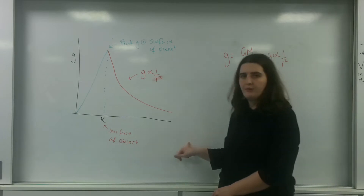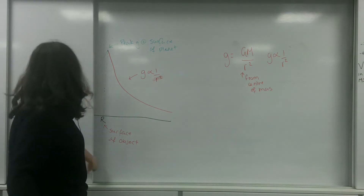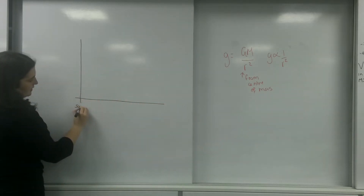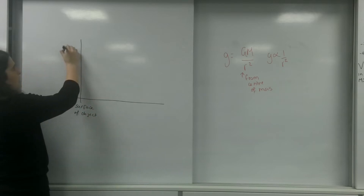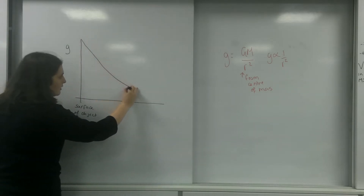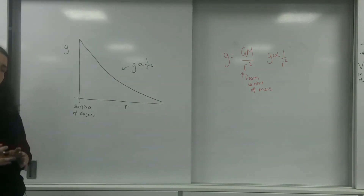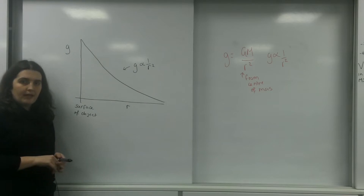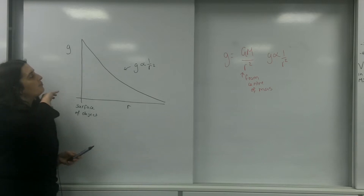This graph is a really important graph to take into consideration. Now I want to take this graph and flip it on its head a little bit, and look specifically at this 1 over R squared portion. I'm only going to look at this section here. So here's my graph — I'm going to start at the surface of the object. This is g on the vertical axis and this is my distance R. And I've got g proportional to 1 over R squared. Now, important features about graphs are the area and the gradient.